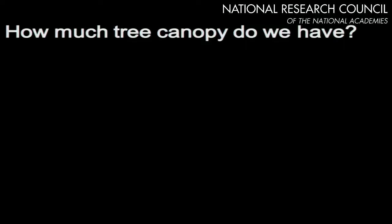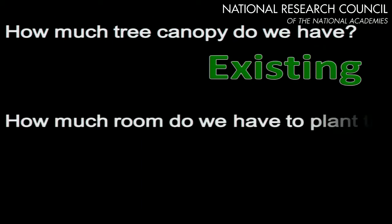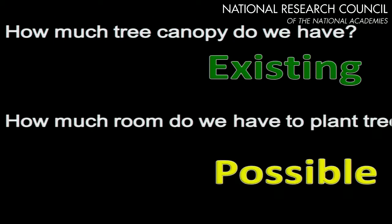The rationale for doing this was really posed not so much by researchers but by managers on the ground. They had two questions that sort of forced us to move in this direction. One was: how much tree canopy do we have right now? We call that the existing. And the other question, as it related to setting tree canopy goals, was: how much room do we have to plant trees? Which we like to call the possible. So the existing — what you have now — and the possible — how much land you have available to plant trees — with this information initially used for urban tree canopy goal setting.